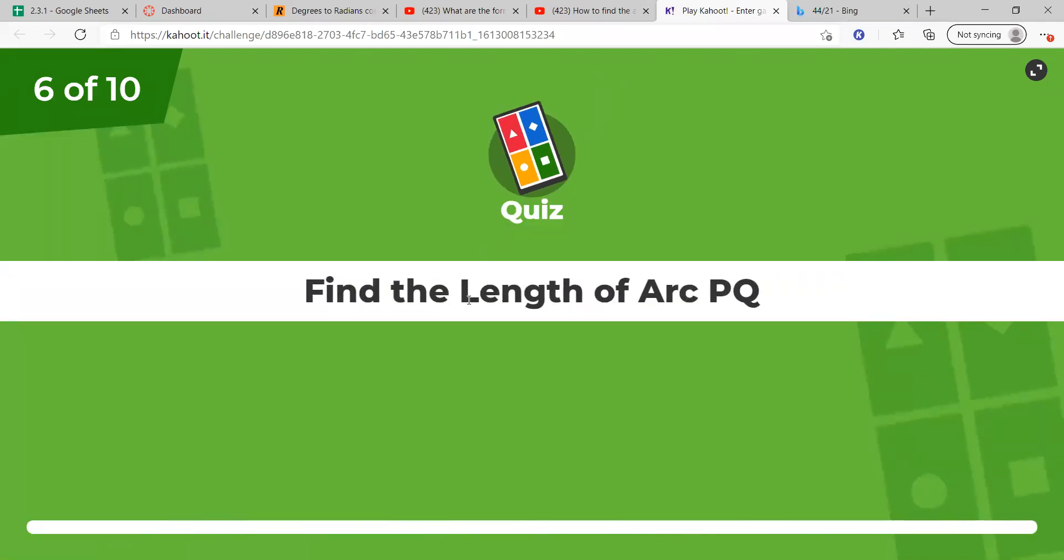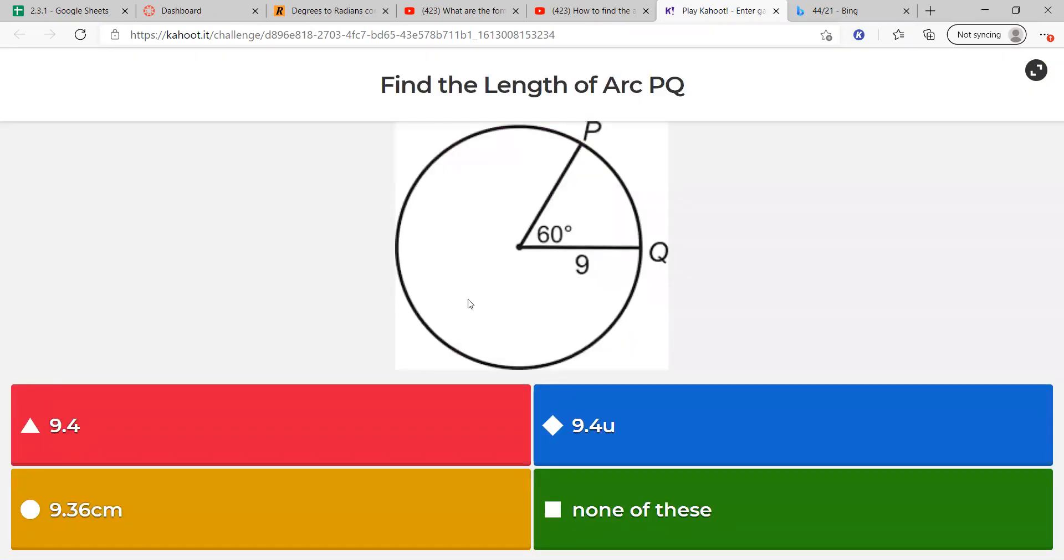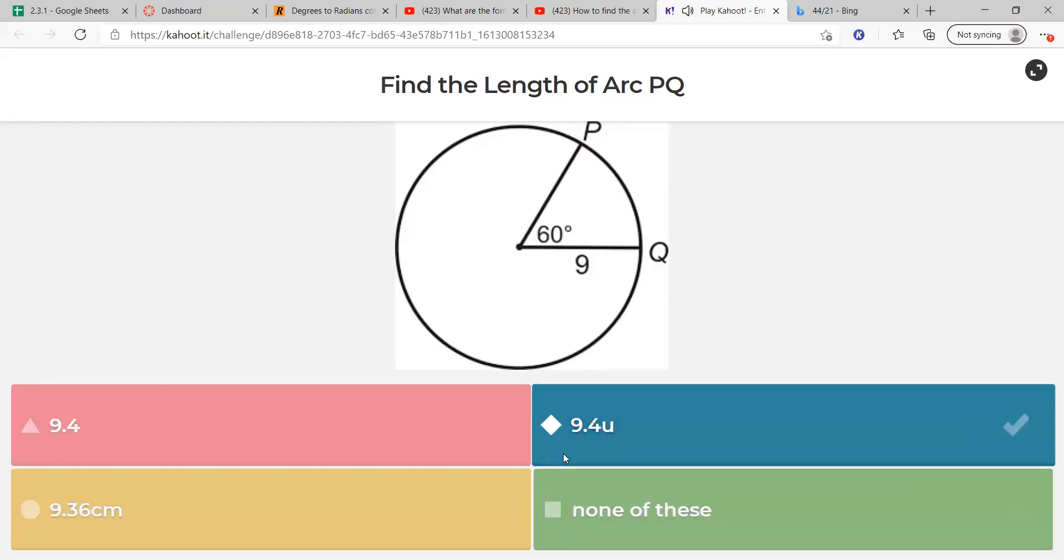Find the length of arc PQ. Oh, whoa. Radius is 9. We say 60 times pi over 180. So that's really pi divided by 3 times 9 over 1. So you got 9 pi divided by 3, which is 3 pi. You see how I got pi divided by 3? Okay. You do 9 times pi, 9 pi. 1 times 3 is 3. So you got 9 pi divided by 3, which is 3 pi. So it should be like 9.4 units. It doesn't say centimeters, that's why. I think it should be. Okay.